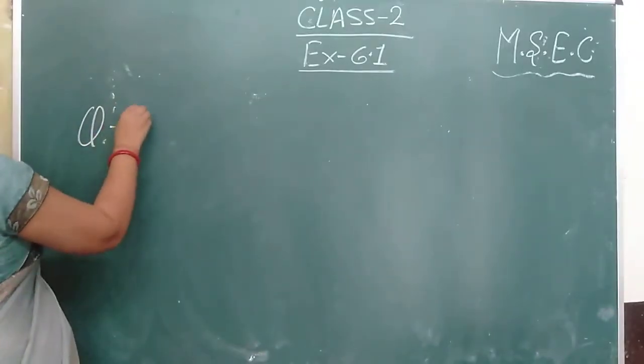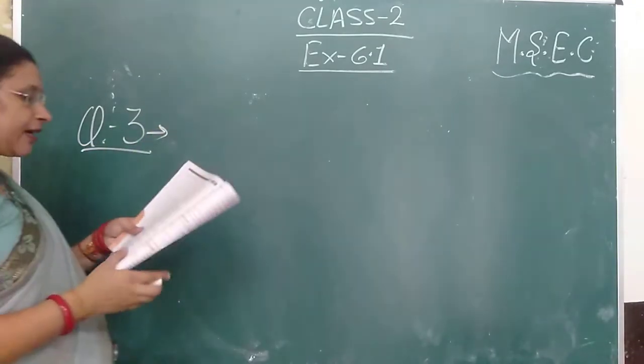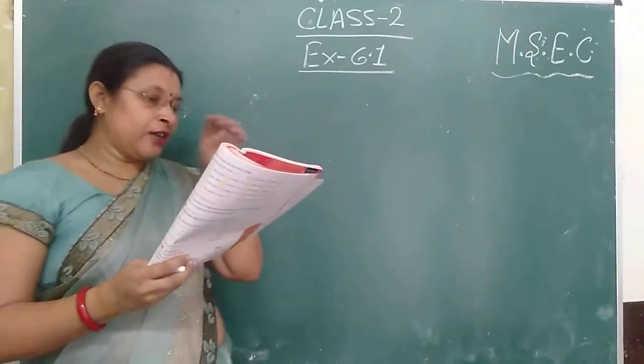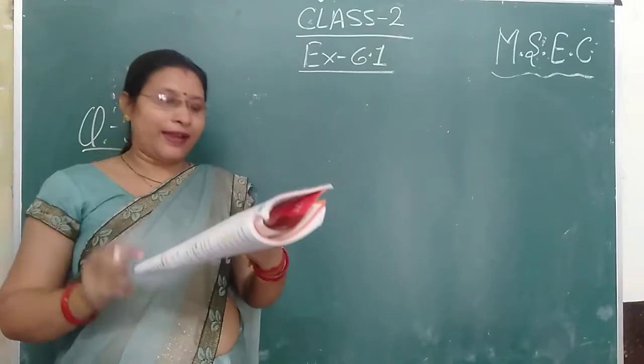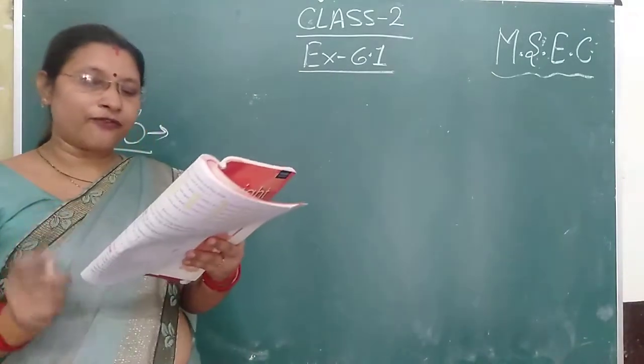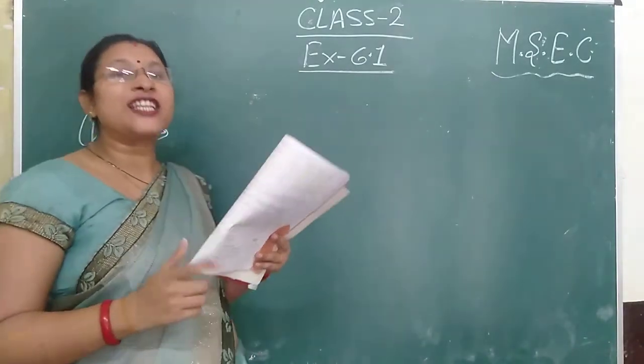Question number 3 is divide the number line. So if you divide the number line, you can see 4, 7 and 14, 7.